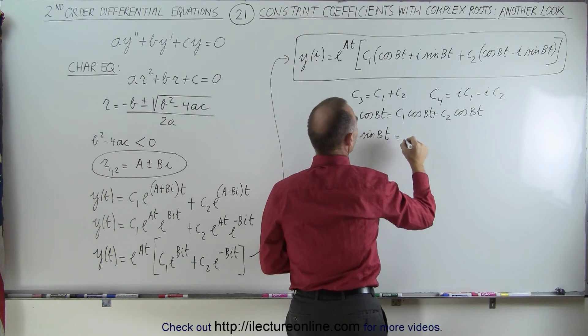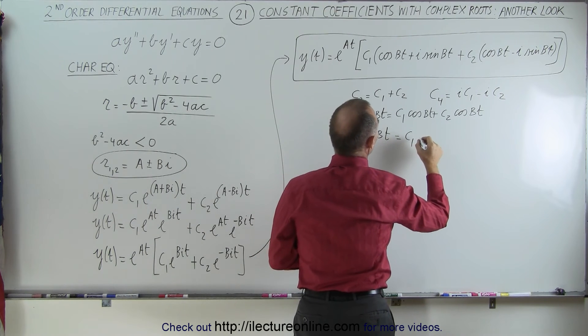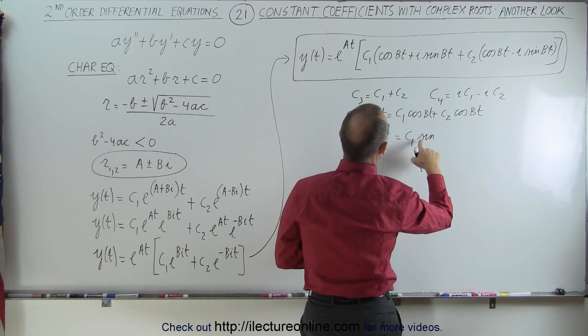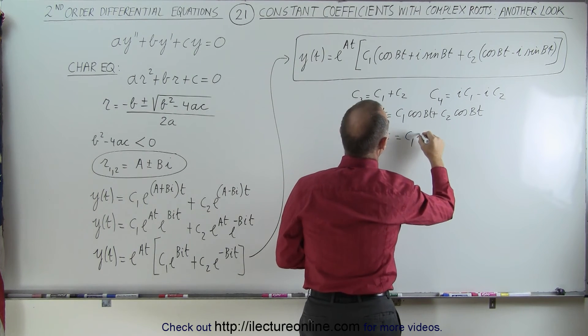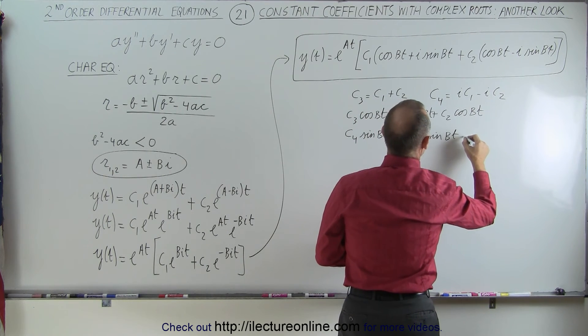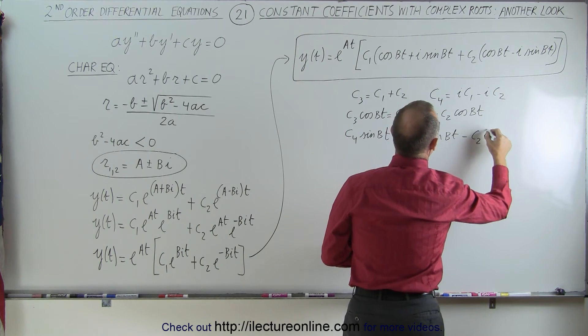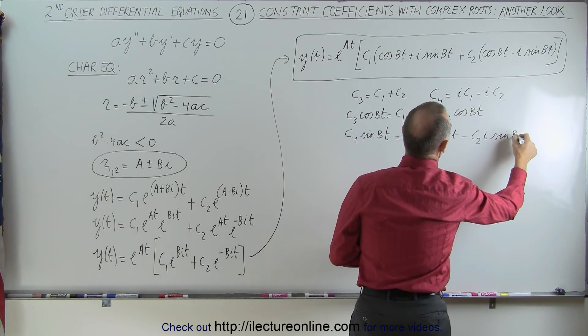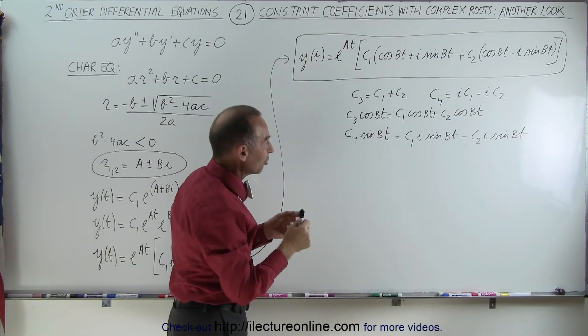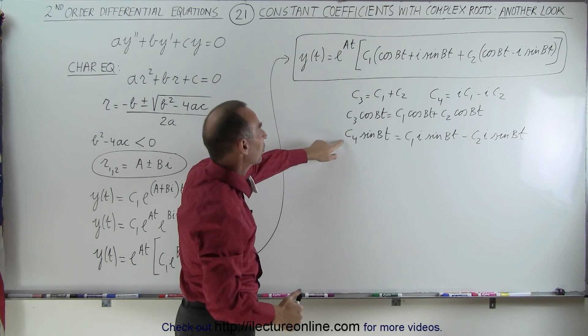And then here, the same thing. This can be written as c1i times the sine of bt minus c2i times the sine of bt. In other words, we're wrapping the i into our constant c4.